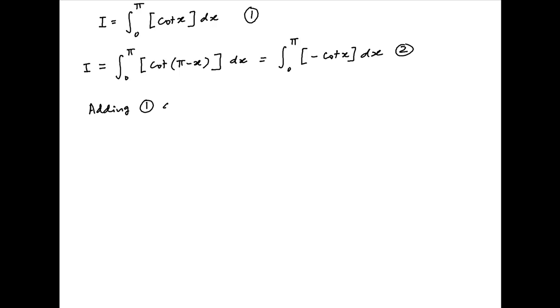Now, adding 1 and 2, we get 2i is equal to integral 0 to pi, integral part of cot x, plus integral part of minus cot x dx.